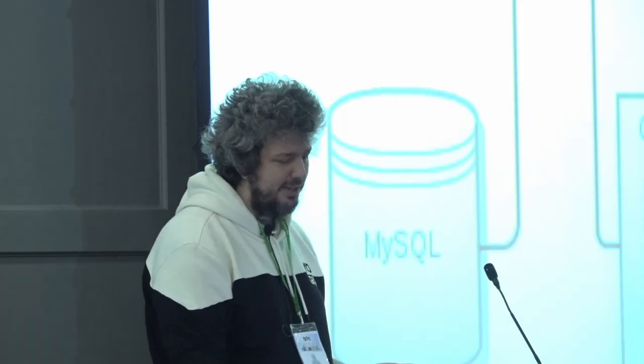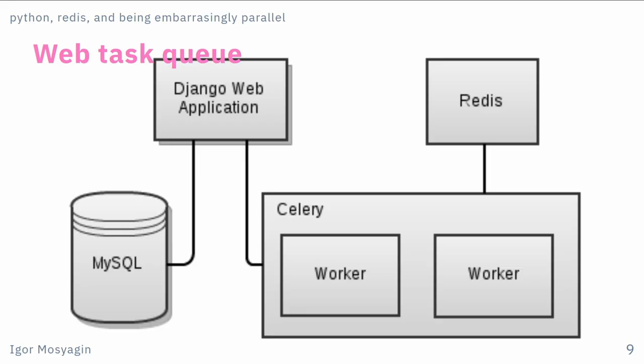In the web context you have particular instruments: a Redis instance with Celery, where Celery uses Redis as both broker and result storage. You have workers as a separate entity inside your ecosystem, alongside your traditional Django web application with its database, and then this cluster doing particular work.